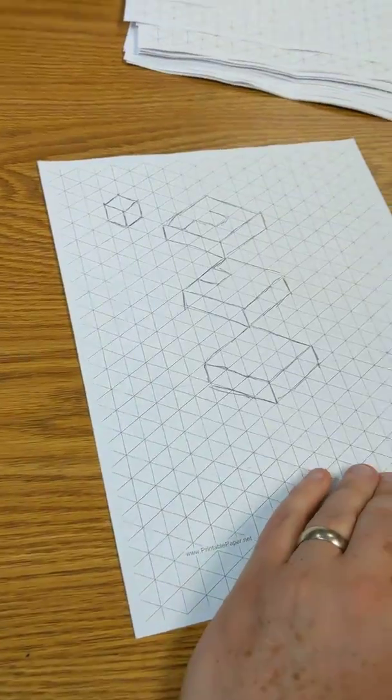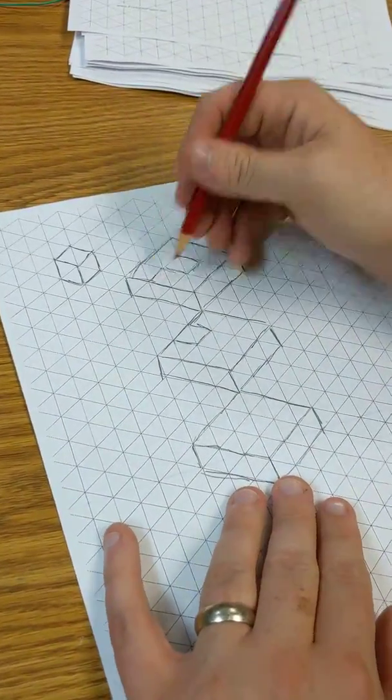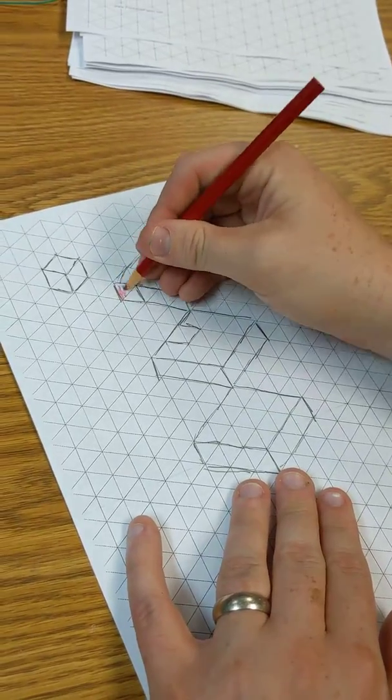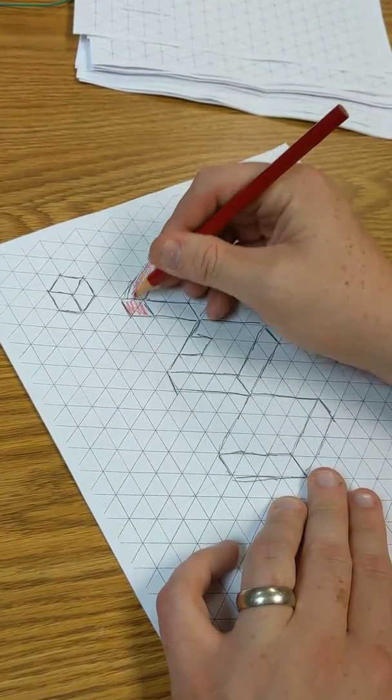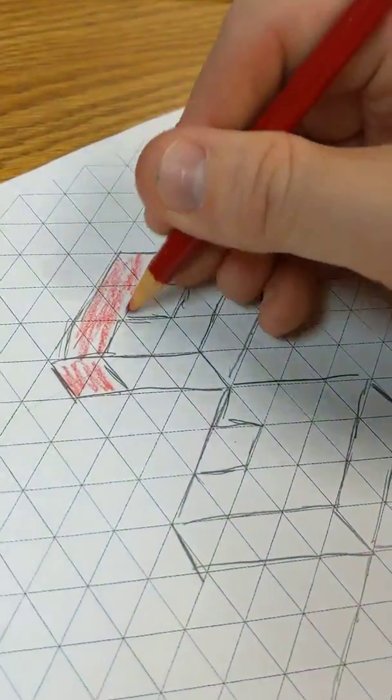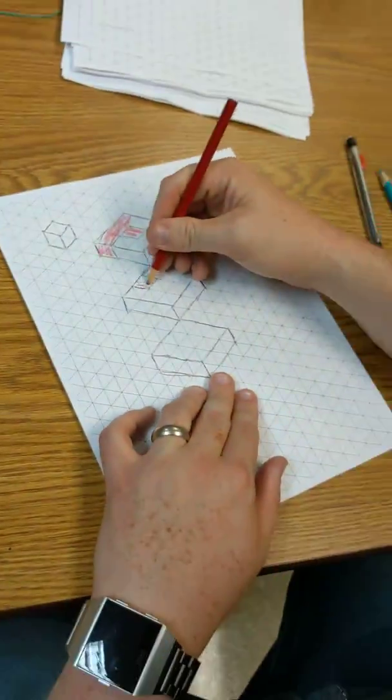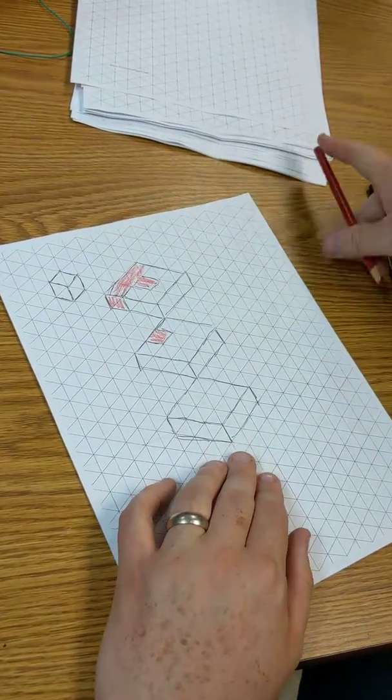Now it's hard to see, so I'm going to take a colored pencil and I'm going to highlight this piece all in red. So that's my first piece.